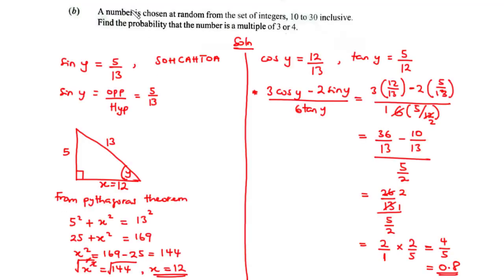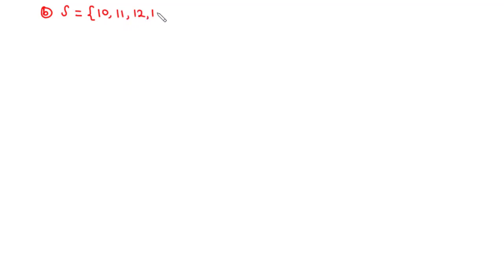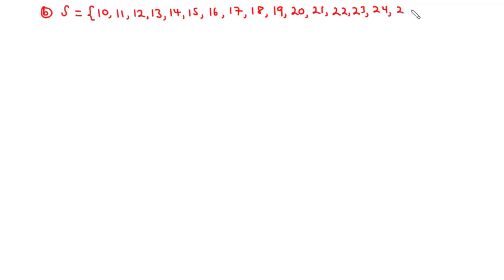First, we are going to list down the elements in the sample space. A number is chosen at random from the set of integers between 10 and 30 inclusively. Starting from 10, we have: 10, 11, 12, 13, 14, 15, 16, 17, 18, 19, 20, 21, 22, 23, 24, 25, 26, 27, 28, 29, and 30. These are the elements in the sample space.